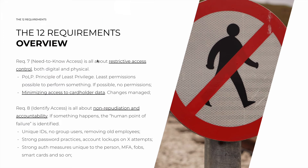Requirement 7, 'Need-to-Know Access,' is all about restrictive access control — both digital and physical — based on the Principle of Least Privilege: the least permissions possible for a user to perform their job. Take any employee: if they can perform their job function using only a masked version of the personal account number — such as the first six digits and the last four — then reduce what they have access to. If they can do their whole job without access to card data at all, remove it. Any changes to roles and permissions must go through a formal change management process.